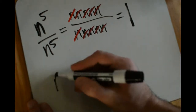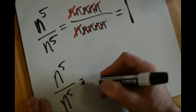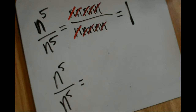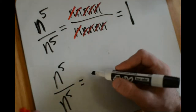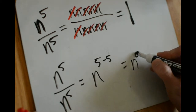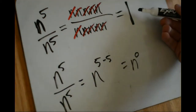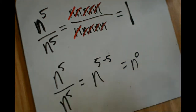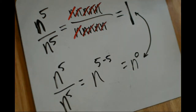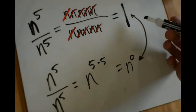Now let's look at this using the shortcut we've just learned. If I have n to the fifth divided by n to the fifth, we've learned that when dividing a term with the same base, you can subtract their exponents. So that would be n to the five minus five, or n to the zero. We simplified this one way and got one, and we simplified it another way and got n to the zero. What this shows is that these two expressions are exactly the same thing — n to the zero is just one.